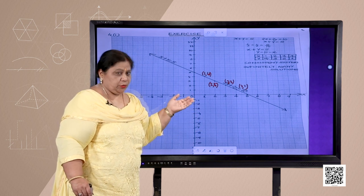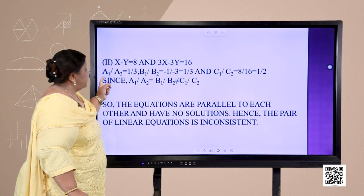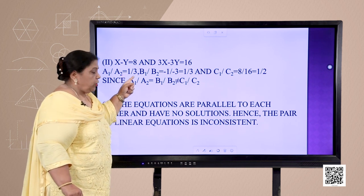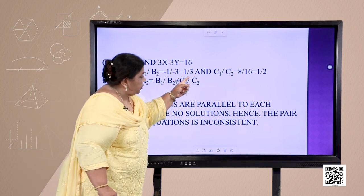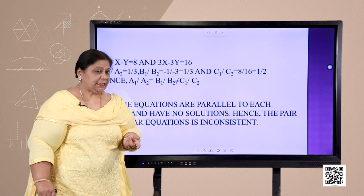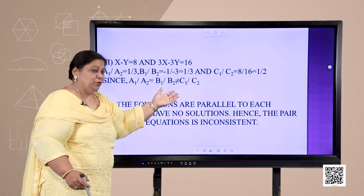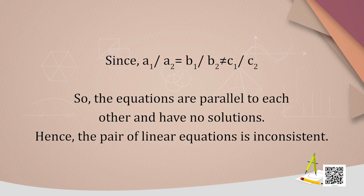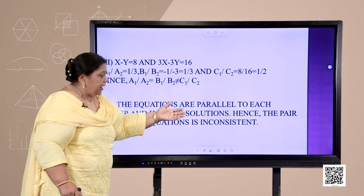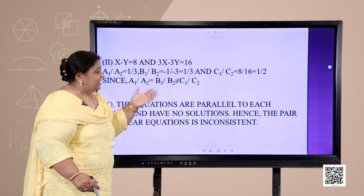Let us see the next question: x − y = 8 and 3x − 3y = 16. The ratios: a1/a2 = 1/3, b1/b2 = (−1)/(−3) = 1/3, and c1/c2 = 8/16 = 1/2. Since a1/a2 = b1/b2 but not equal to c1/c2, the equations are parallel to each other and have no solutions. Hence the pair of linear equations is said to be inconsistent. So we need not draw the graph here.